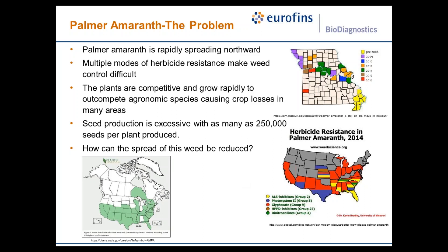Palmer Amaranth is a very aggressive weed that is spreading northward. You can see in the lower panel the USDA's map for the distribution of this species. They have classified it as a native species along the whole eastern seaboard and all the way up into Wisconsin. However, despite being classified as a native species on this map, many states are tracking the progression and spread of this aggressive weed. Missouri has tracked how this weed is spreading throughout the state from 2009 to 2016.